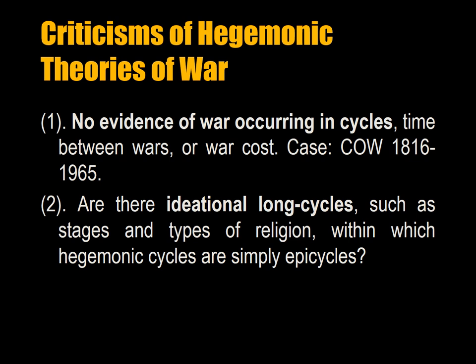What are some criticisms of hegemonic theories of war? One, according to Geller and Singer, there is no evidence of war occurring in cycles if you look at the time between wars or war cost. This is based on a test of the correlates of war between 1816 and 1965 — though maybe the correlates of war doesn't have enough data to make that kind of falsification. Two, are there ideational long cycles, such as the stages and types of religion, within which hegemonic cycles are simply epicycles?